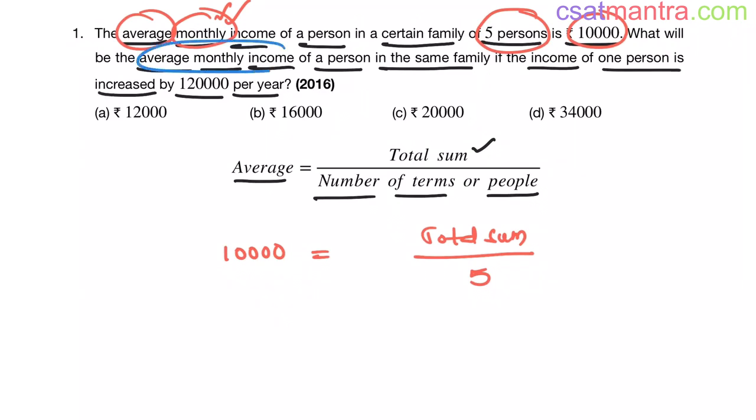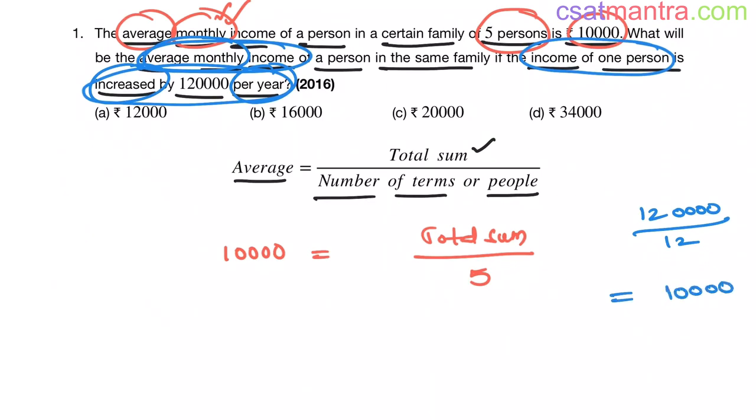Now we want average monthly income of a person in the same family if the income of one person is increased by 1,20,000 per year. Here per year increase in income is given my friends, but we are asked to find average monthly income. So let's convert this per year increase in months. So 1,20,000 is increased per 12 months. Now increase per 1 month would be by 12. So this is 10,000. So income of that person is increased by 10,000 per month.